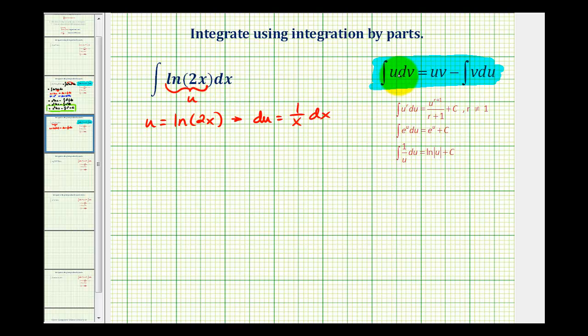Now whatever remains has to be dv. So dv is equal to dx for this problem, which would give us v equals x. The integral of dx, or if you want 1 dx, would just be x. Now that we have everything, we can apply integration by parts.